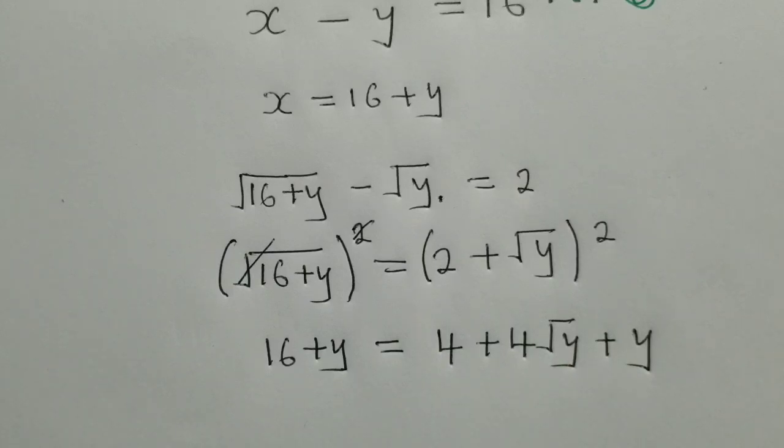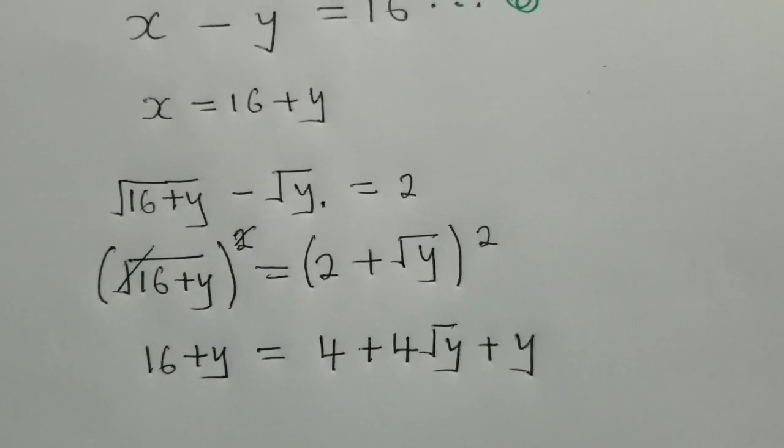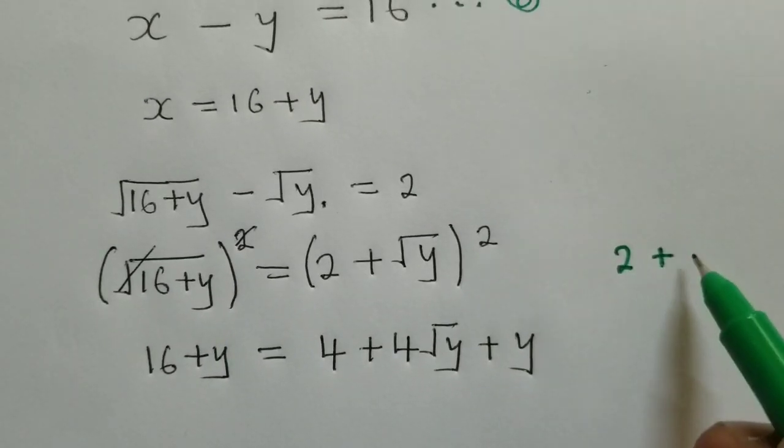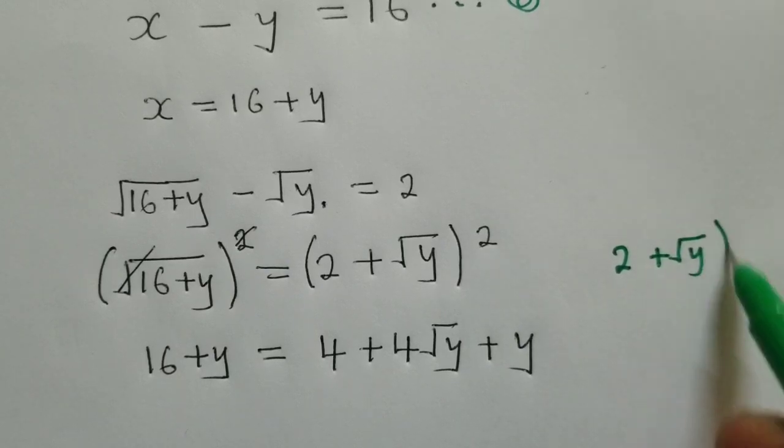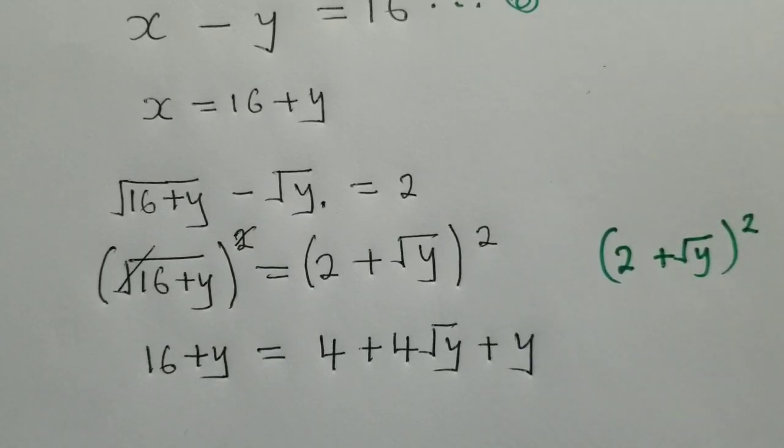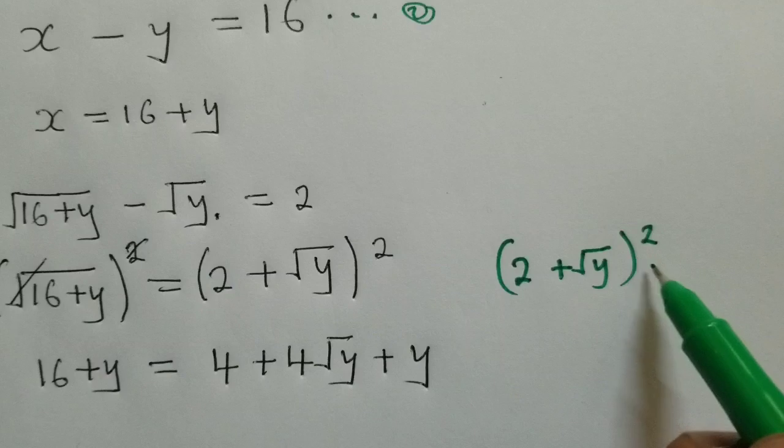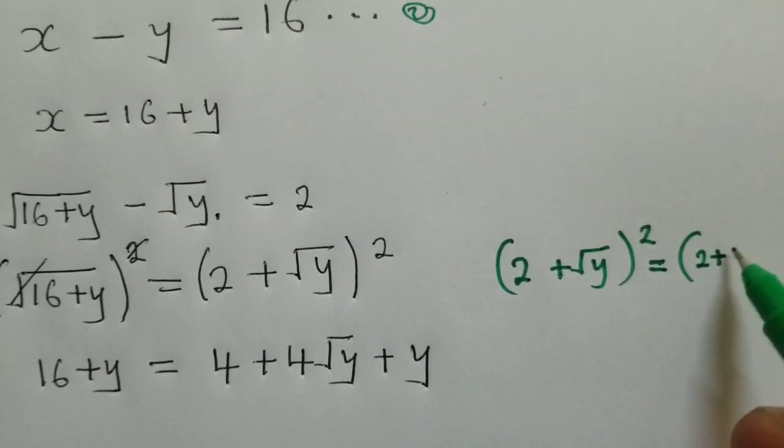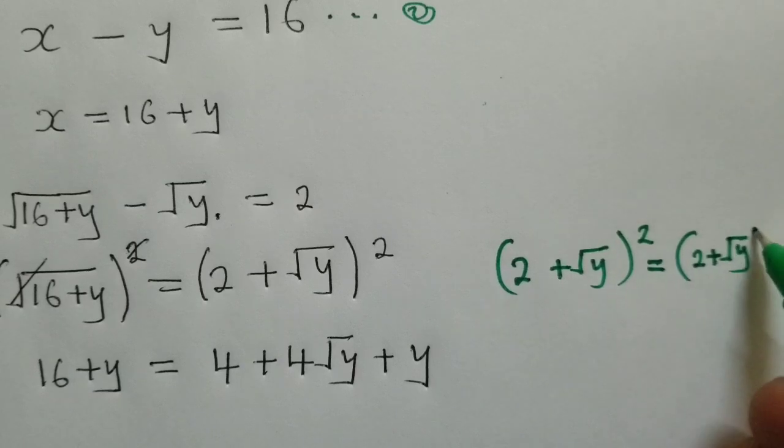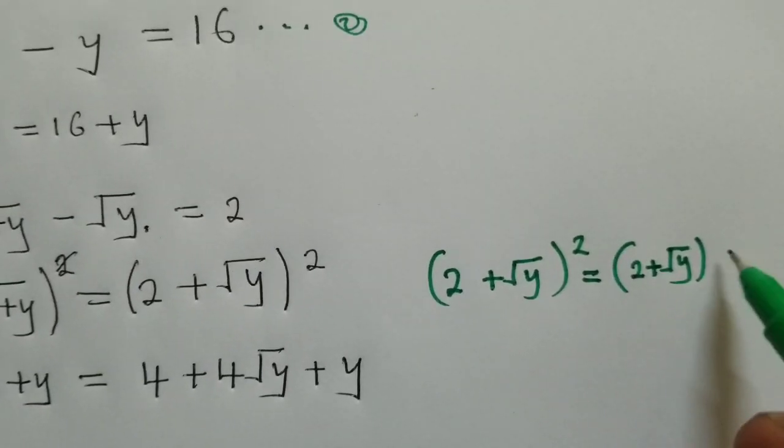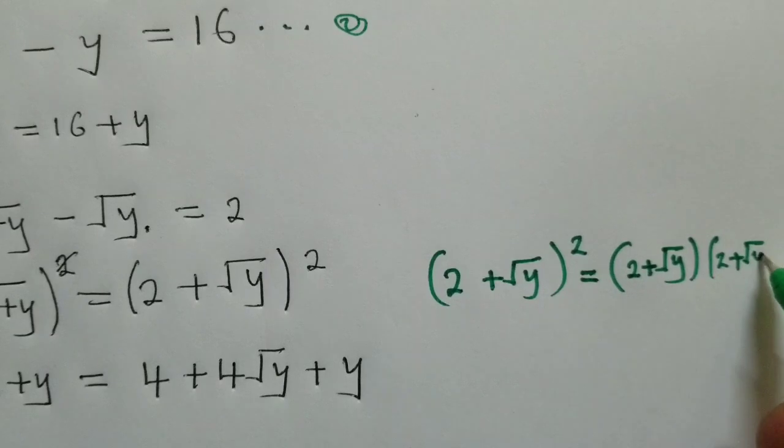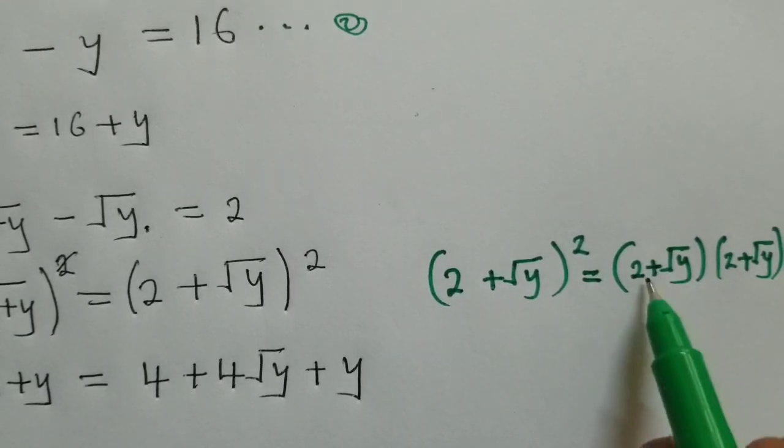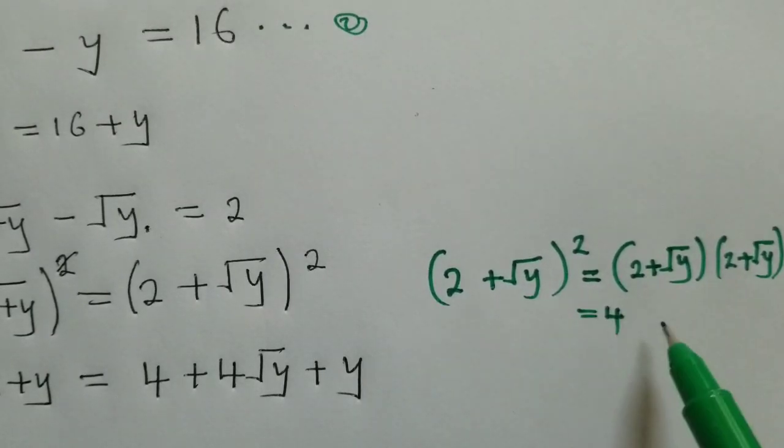Let me show you what I've done. Here we have 2 plus root of y to the power 2. This is the same as 2 plus root of y times the same thing. When we multiply here, we're getting 4, because 2 times 2 is 4. 2 times root of y is 2 root of y.